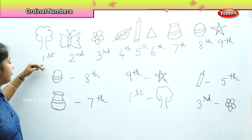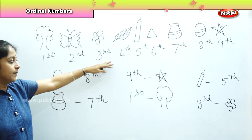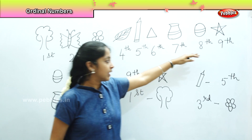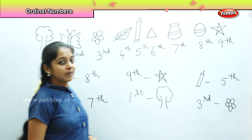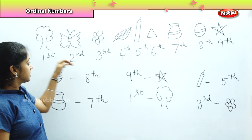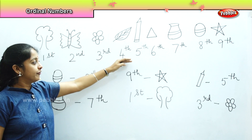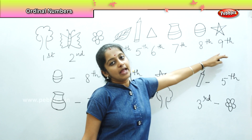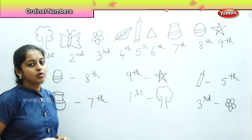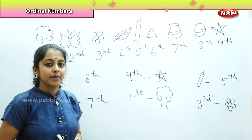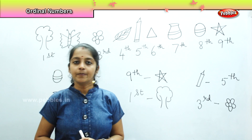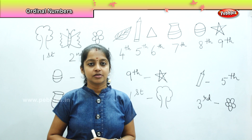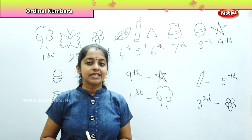Can you repeat with me? 1st, 2nd, 3rd, 4th, 5th, 6th, 7th, 8th, 9th. Let's repeat the ordinal positions again: 1st, 2nd, 3rd, 4th, 5th, 6th, 7th, 8th, and 9th. This is how we learn about ordinal numbers and find the position of a particular object. Hope you all enjoyed the class and learned about ordinal numbers. We will be doing the next concept after this.